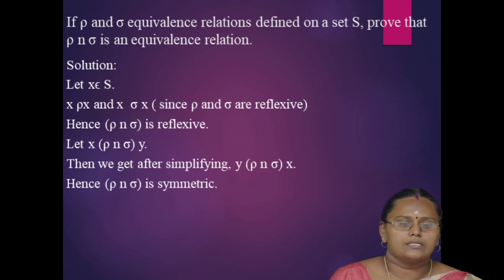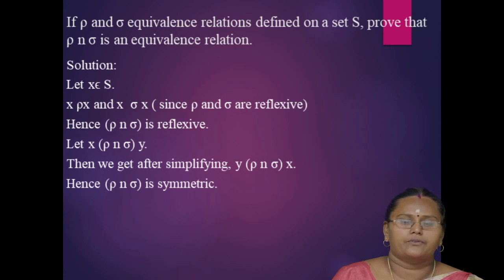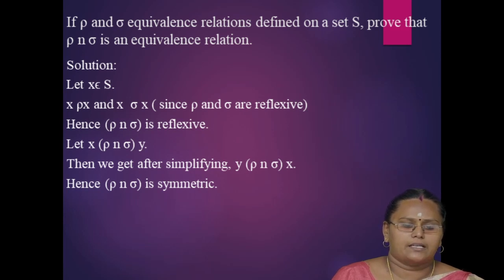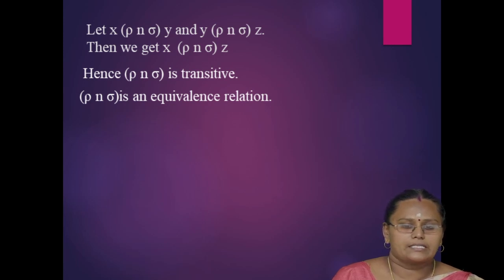Next, one theorem: if rho and sigma are equivalence relations defined on a set S, prove that rho intersection sigma is an equivalence relation. Solution: Let X belong to S. Since rho and sigma are equivalence relations, both are reflexive, so X is related to X in both. Therefore, rho intersection sigma is reflexive. Next, we prove symmetry: if X is related to Y under rho intersection sigma, then X is related to Y under both rho and sigma, so rho intersection sigma is symmetric. And if X (rho ∩ sigma) Y and Y (rho ∩ sigma) Z, we get X (rho ∩ sigma) Z. Therefore, rho intersection sigma is transitive, and hence an equivalence relation.